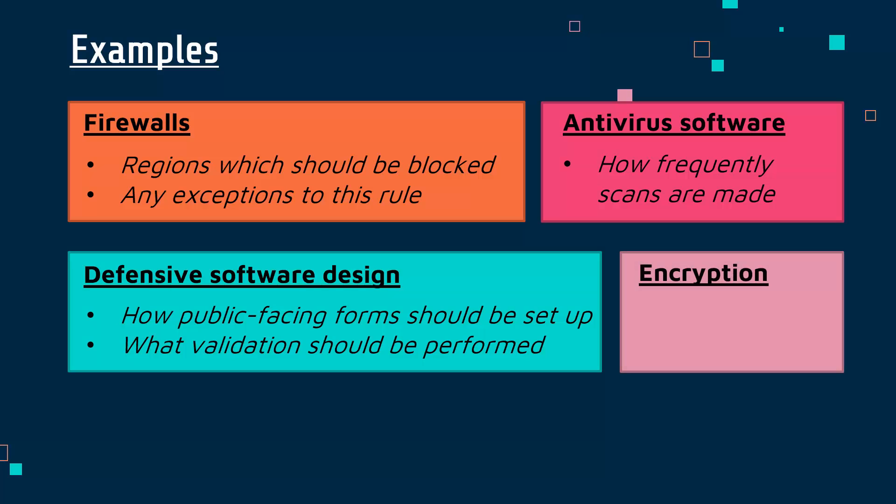Finally, as an example, encryption. There are many different settings which can be outlined in policies — for example, the actual type of encryption being used and the algorithm. There are lots of different types of encryption, some quite weak and some quite strong. It's important as a security manager to decide which one to use — a strong one of course — and to specify how to use it in a way that plays to its strengths.